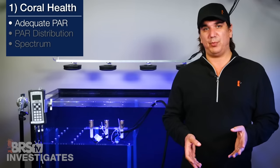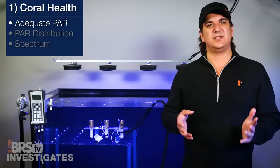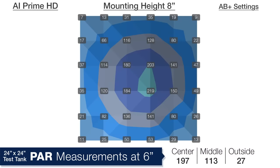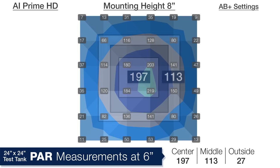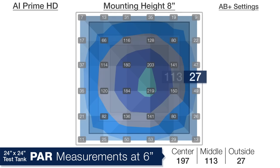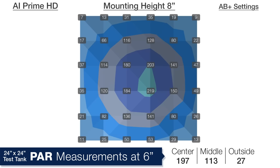If you want to get additional PAR you can certainly increase some of the other channels. Looking at a depth of 6 inches the PAR in the center 4 inches is 197, 4 inches outside that 113, and the outer ring an average of 27 PAR. Overall this represents about a 35 percent drop in PAR.